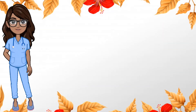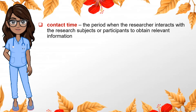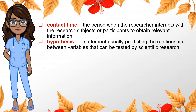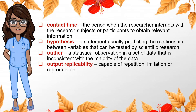To easily understand the similarities and differences between the two research methods, here is a short definition of terms. First, contact time — the period when the researcher interacts with the research subjects or participants to obtain relevant information. Second, hypothesis — a statement usually predicting the relationship between variables that can be tested by scientific research. Third, outlier — a statistical observation in a set of data that is inconsistent with the majority of the data. Fourth, output replicability — the capability or ability of repetition, imitation, or reproduction.